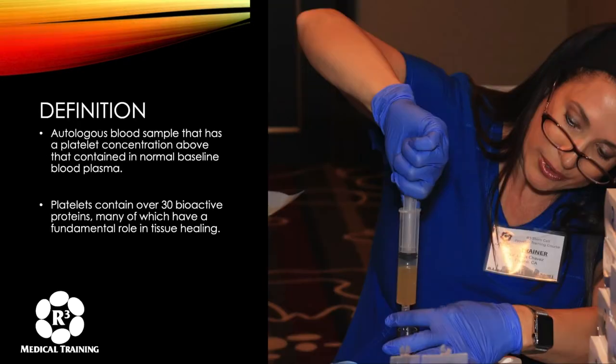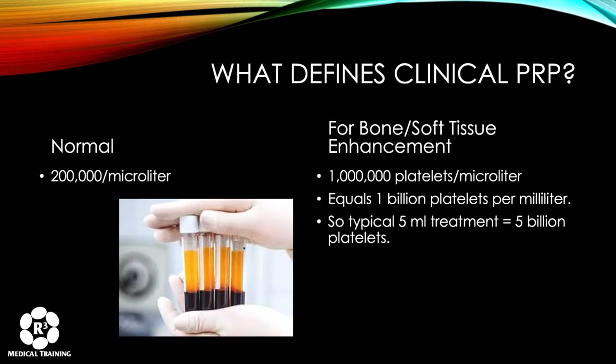The definition of PRP is that it is an autologous blood sample that has a platelet concentration above that contained in normal baseline blood plasma. Platelets contain over 30 bioactive proteins, many of which have a fundamental role in tissue healing. Everybody thinks about them as being great for clotting, and they are, but the fact is they do so much more.